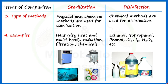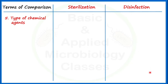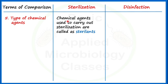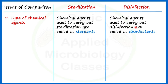Let's come towards the fifth point of difference: type of chemical agents. The chemical agents used to carry out sterilization are called sterilants, and chemical agents used to carry out disinfection are called disinfectants. There are some chemicals which are used as both sterilants as well as disinfectants.